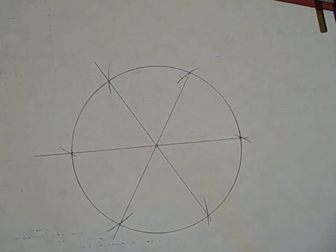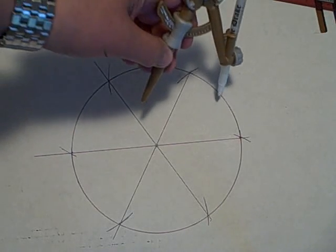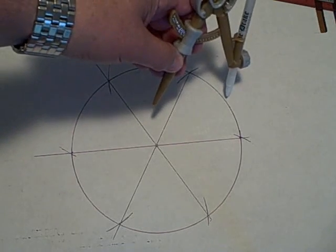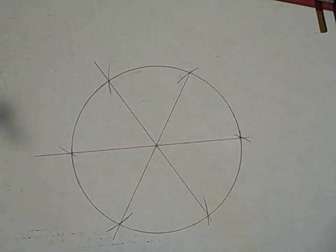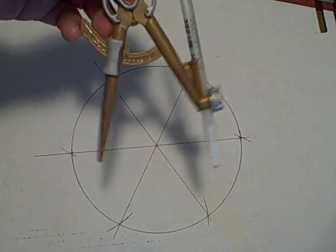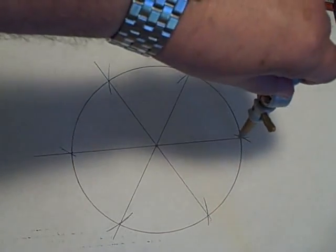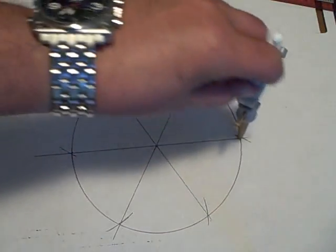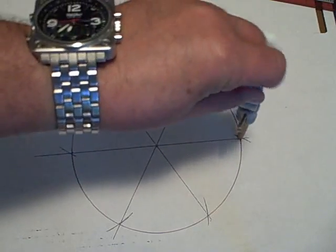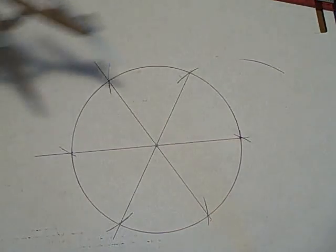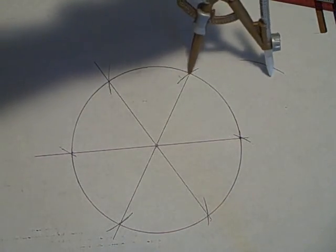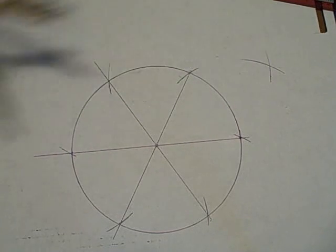Now isn't that kind of an interesting thing? Now if we could repeat that process, going halfway, starting at a point halfway in between, and it's very easy to do that. Once again, I have not changed the setting on the compass. But I'm going to put the point here and draw an arc out there. And I'll put the point here and draw an arc out there.